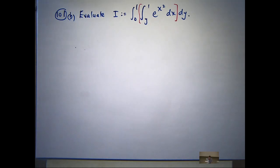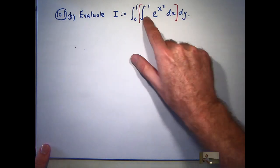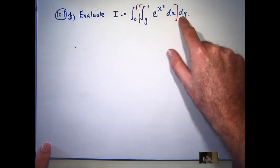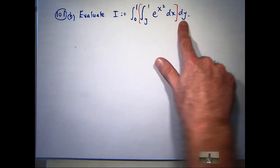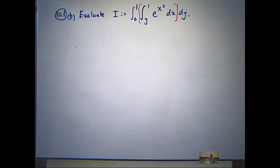But if I could switch the orders of integration and adjust these, then I could easily integrate e to the x squared with respect to y. Okay, what's the anti-derivative there? Well, it's y times e to the x squared. Okay, I can do that. That's no worries. So let's try to switch the order of integration around.